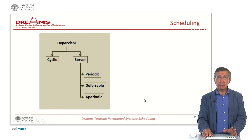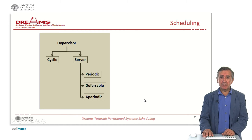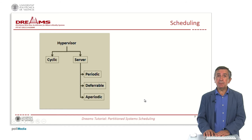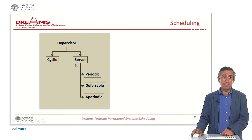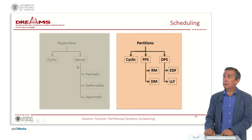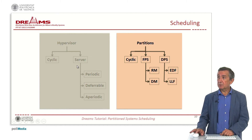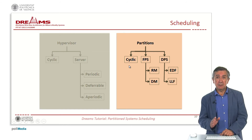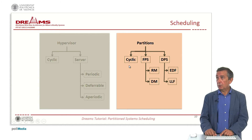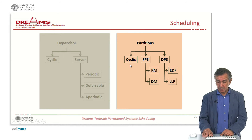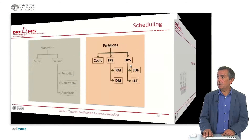Regarding scheduling, at the hypervisor level we can use a cyclic schedule or a server-based scheduling policy. The server-based policy can be periodic, deferrable, or aperiodic — we will discuss more about that. Within partitions, scheduling can be cyclic, fixed-priority using rate monotonic or deadline monotonic, or dynamic priority based on EDF or LLF, as known from operating systems.